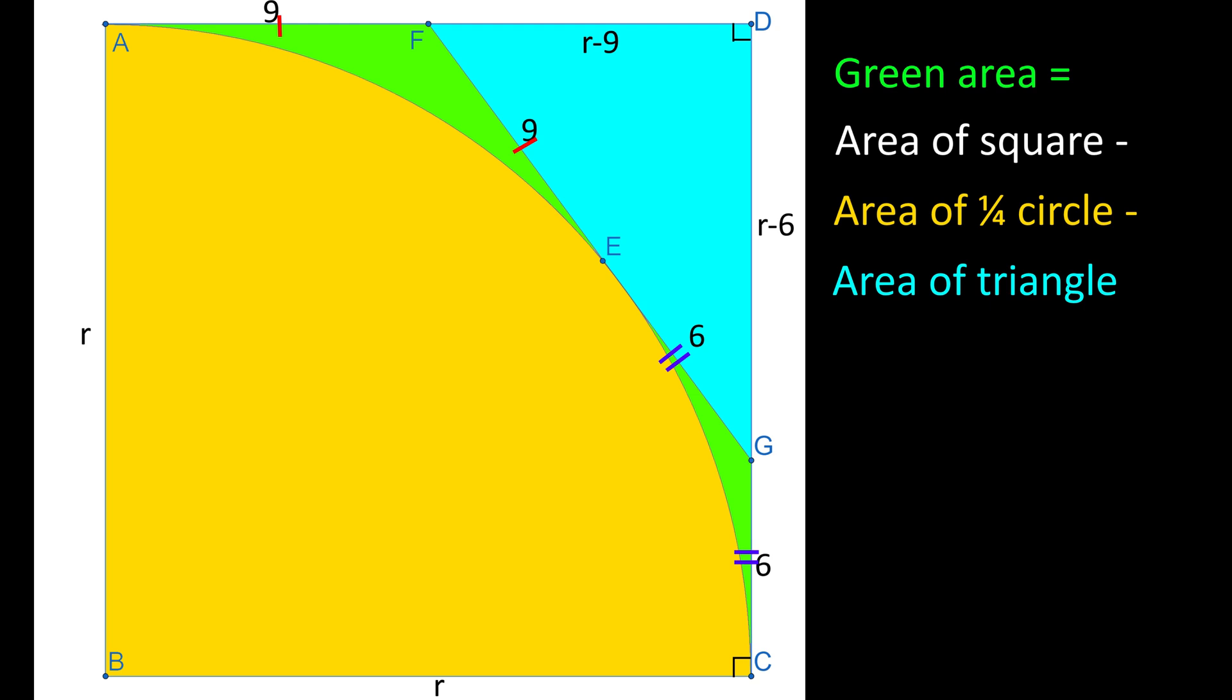The area of the green region is area of square, minus area of quarter circle, minus the area of the triangle. I will leave this calculation as an exercise for you. Comment below to tell us what answer you come up with.